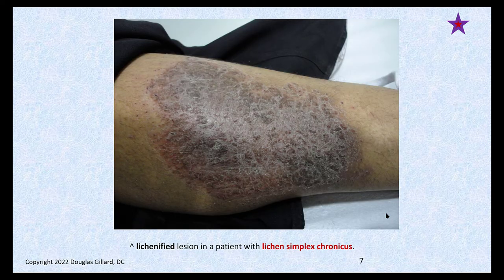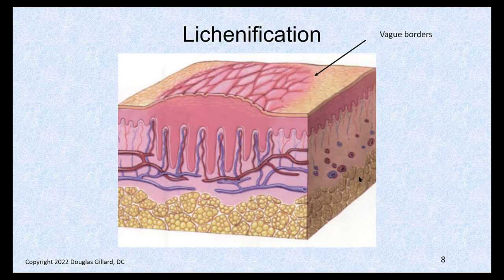Here's another one that is raised. Here you can tell where it starts and stops, but here you can't. This is a lichenified lesion in someone with LSC — lichen simplex chronicus. There's fluid underneath that pushes up and kind of magnifies the skin.